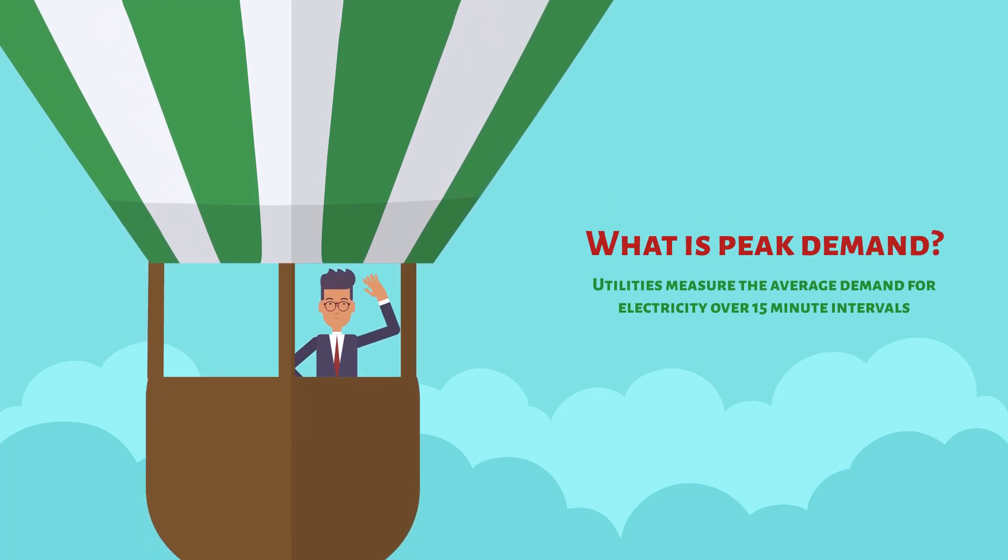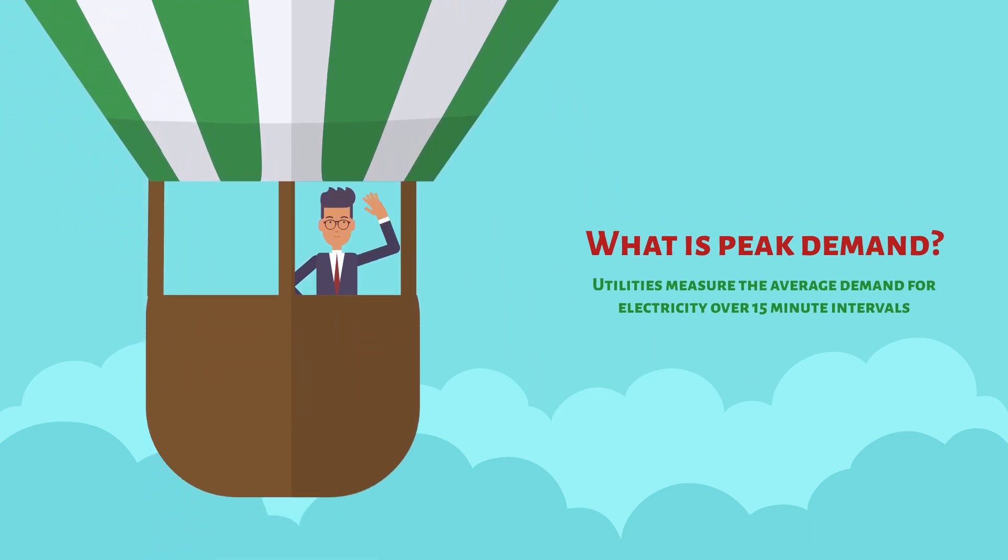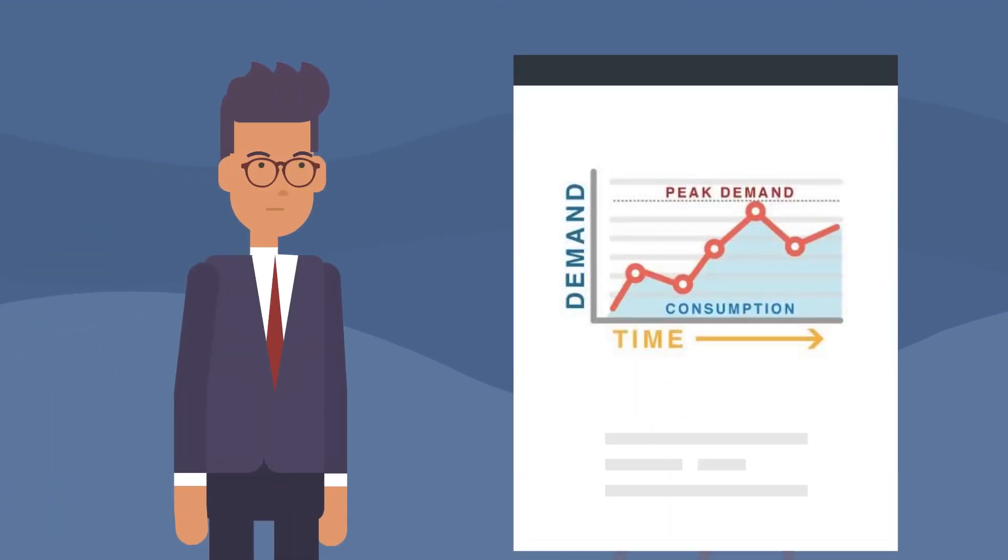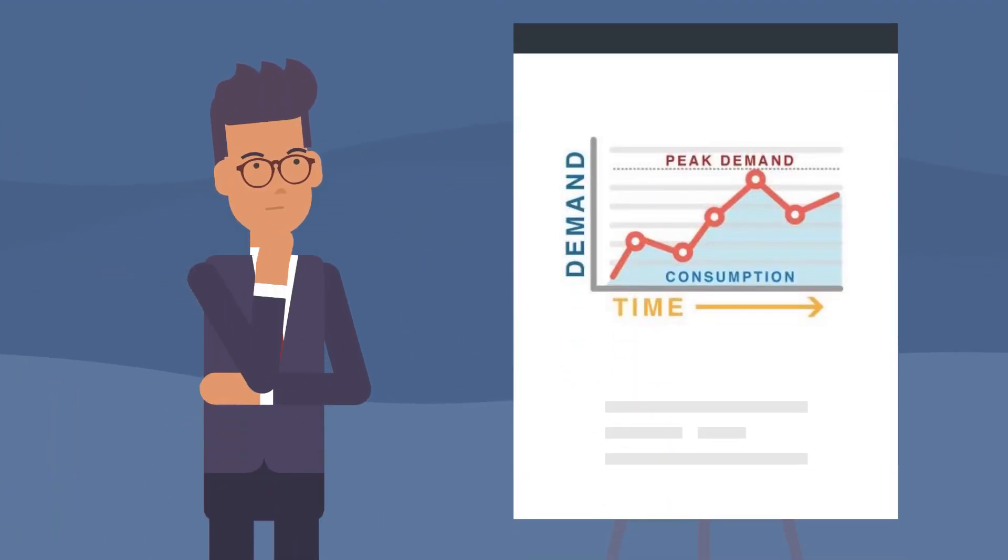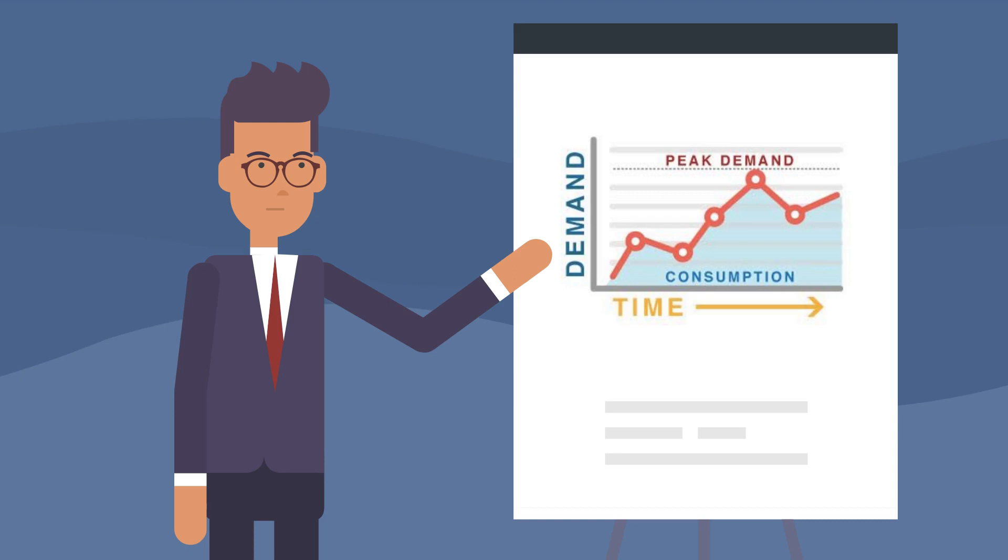What is Peak Demand? Utilities measure the average demand for electricity over 15-minute intervals. To do so, a utility company adds up the consumed energy and divides it by the time interval to determine peak demand. Peak demand is generally the highest average power consumed.